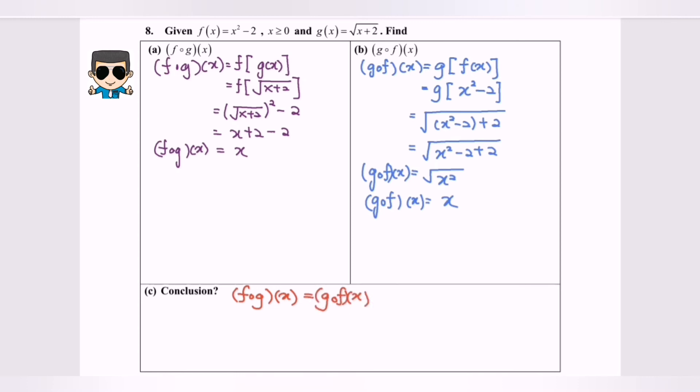So whenever you see the conclusion or the final answer is x, what can we conclude? The conclusion is f and g are inverse to each other.